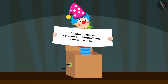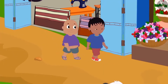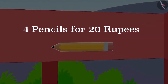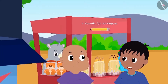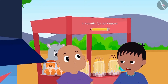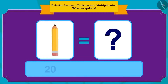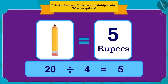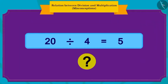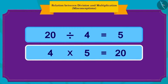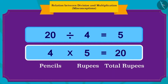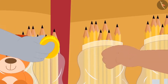Raju and Bablu are out in the market. Raju read a sign on Gagu's shop: four pencils for 20 rupees. He asked Bablu how much they would pay for one pencil. Raju and Bablu will need to pay 5 rupees for one pencil. We can find this with division: 20 ÷ 4 = 5. We can write this in terms of multiplication: four pencils times 5 rupees each equals a total of 20 rupees. Bablu quickly handed 5 rupees to Gagu and bought the pencil.